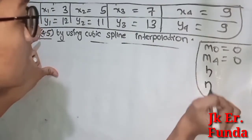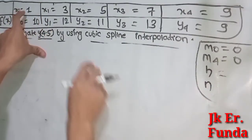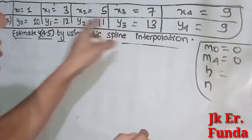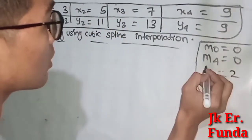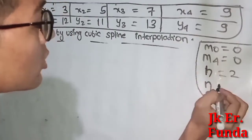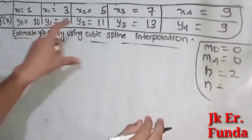For the solution, we have the data points and intervals. The intervals are: 3 to 1 is 2, 5 to 3 is 2, 7 to 5 is 2. Yes, we have equal intervals. The interval values are 0, 1, 2, 3, 4, so we have 4 intervals.